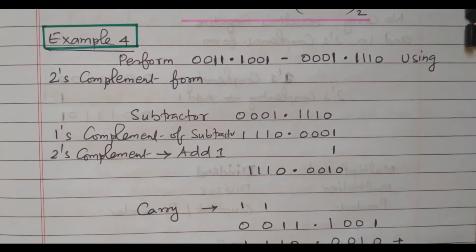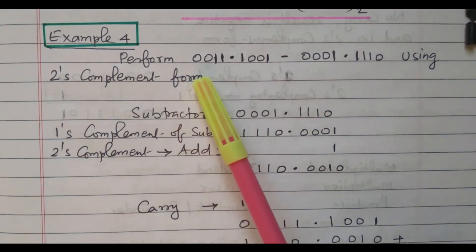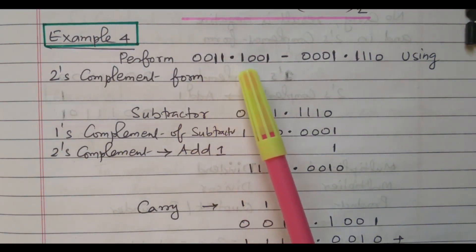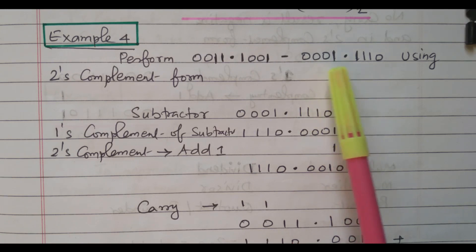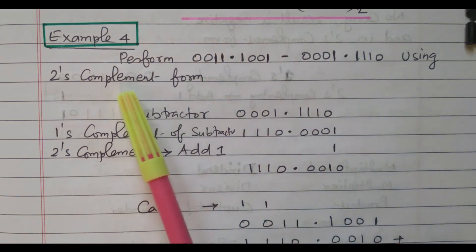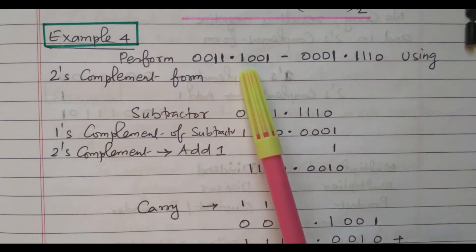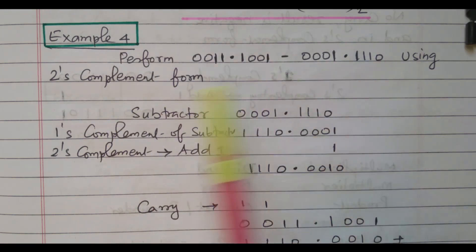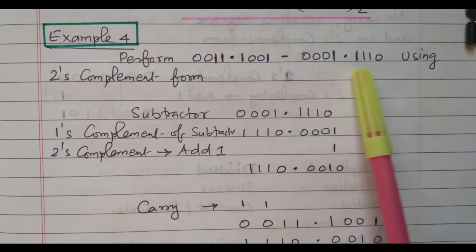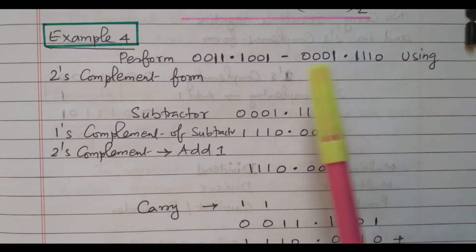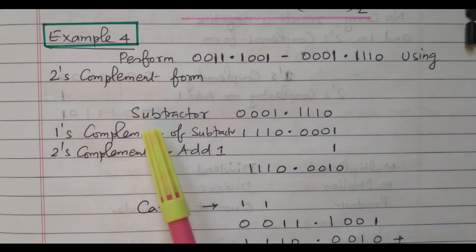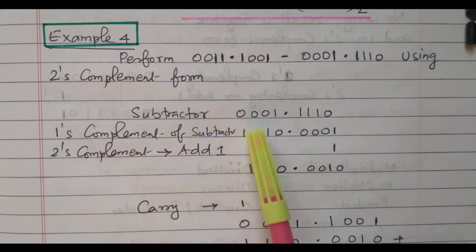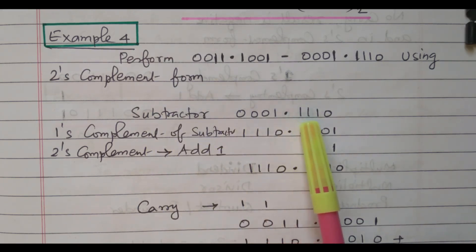Now we will go to the second example. Perform 0011.1001 minus 0001.1110 using the 2's complement method. The decimal values are indicated. So this is the first number and this is the second number. In 2's complement method, we need to take the 2's complement of the second number and add it with the first number. The second number is 0001.1110.